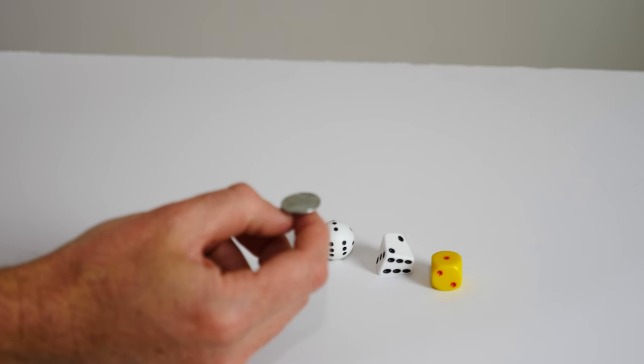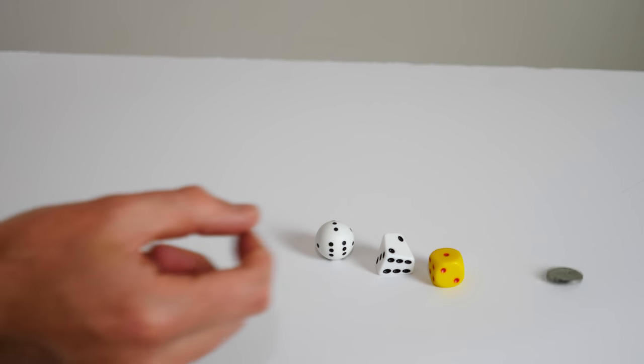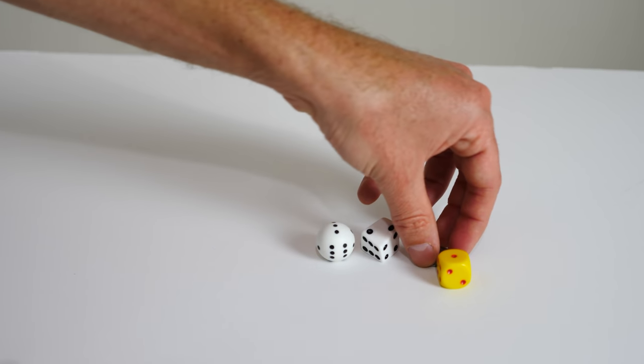For example, you could have a completely fair coin, but get really good at flipping it so that it always lands on heads if you do a small flip.